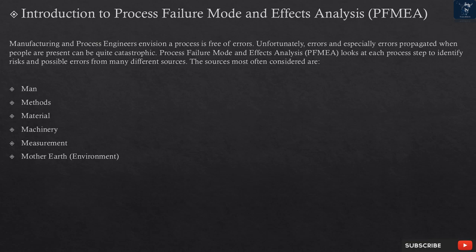Manufacturing and Process Engineers envision a process that is free of errors. Unfortunately, errors — and especially errors propagated when people are present — can be quite catastrophic. Process Failure Mode and Effects Analysis looks at each process step to identify risks and possible errors from many different sources. The sources most often considered are: Man, Methods, Material, Machinery, Measurement, and Mother Earth (Environment).